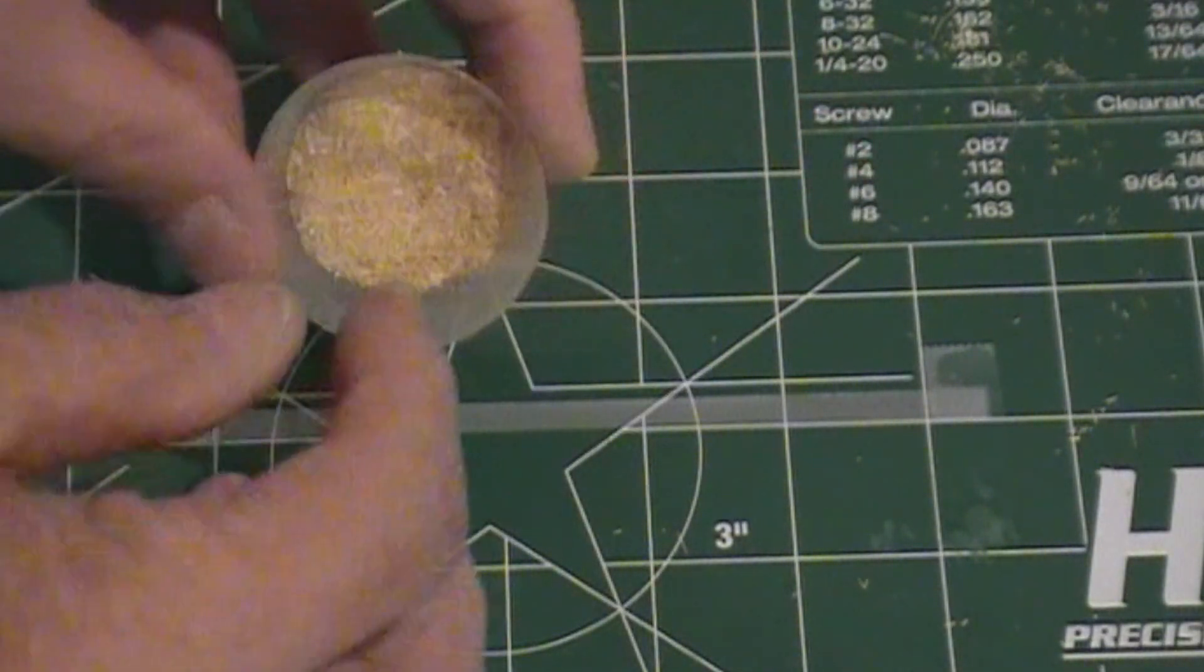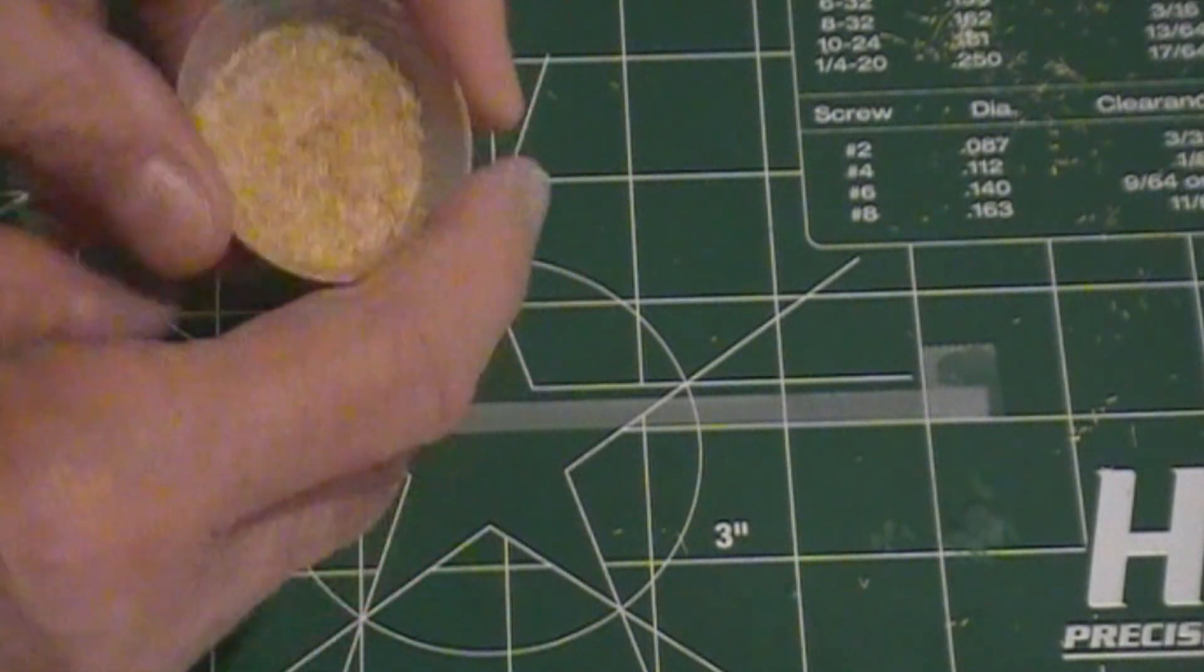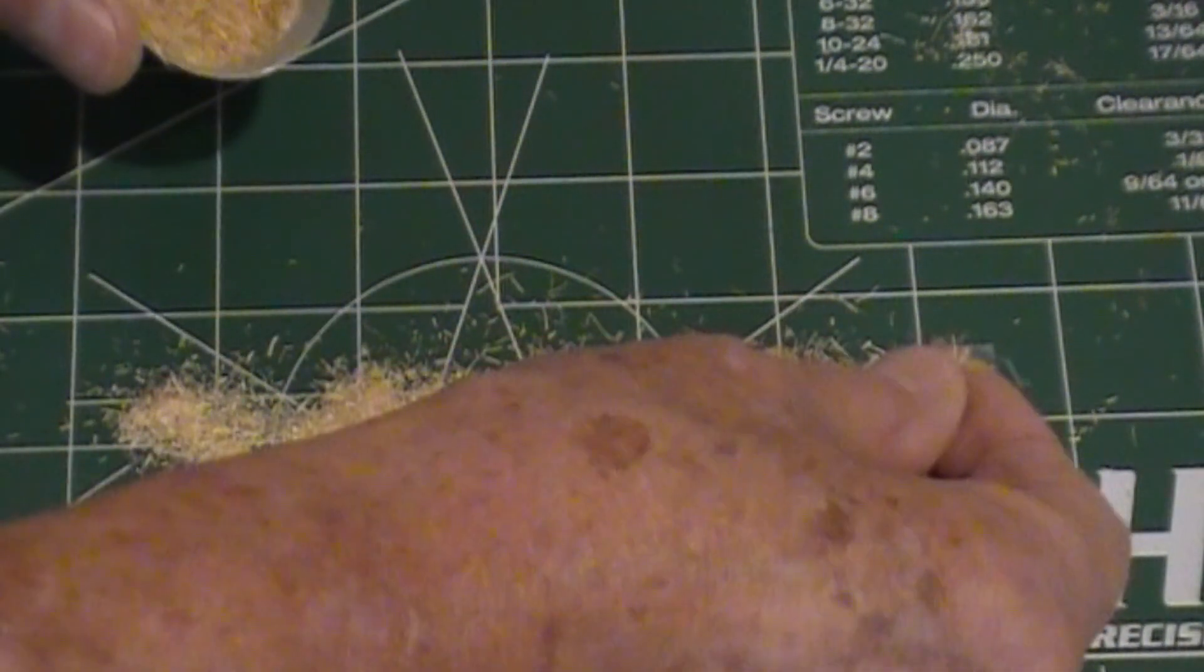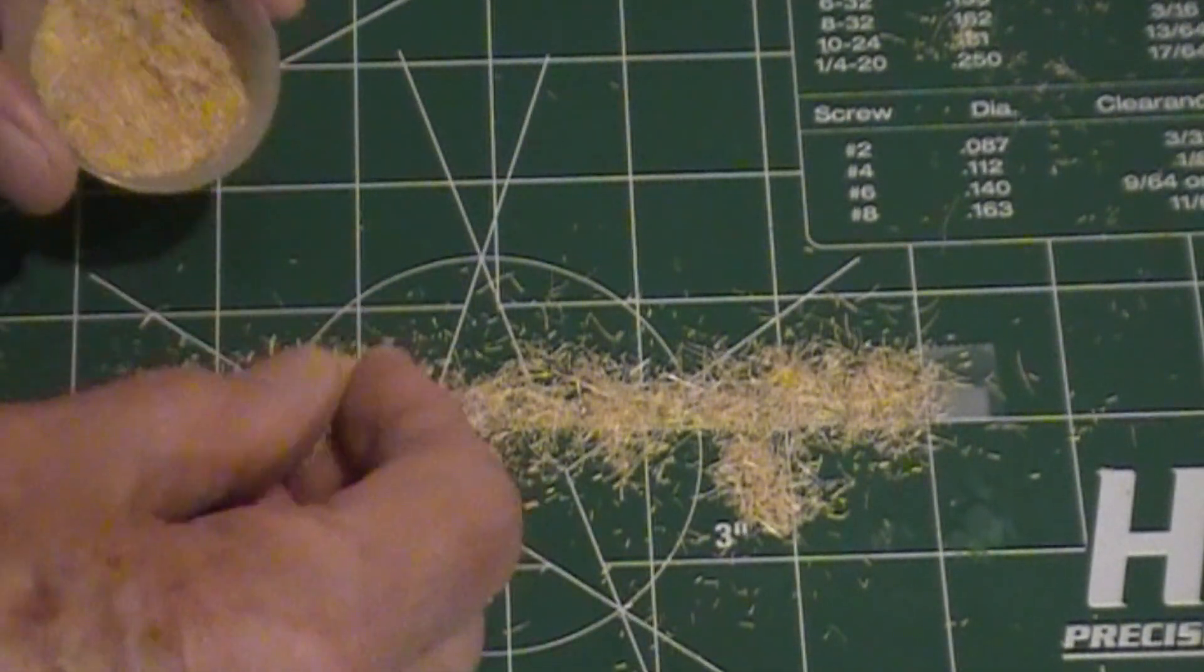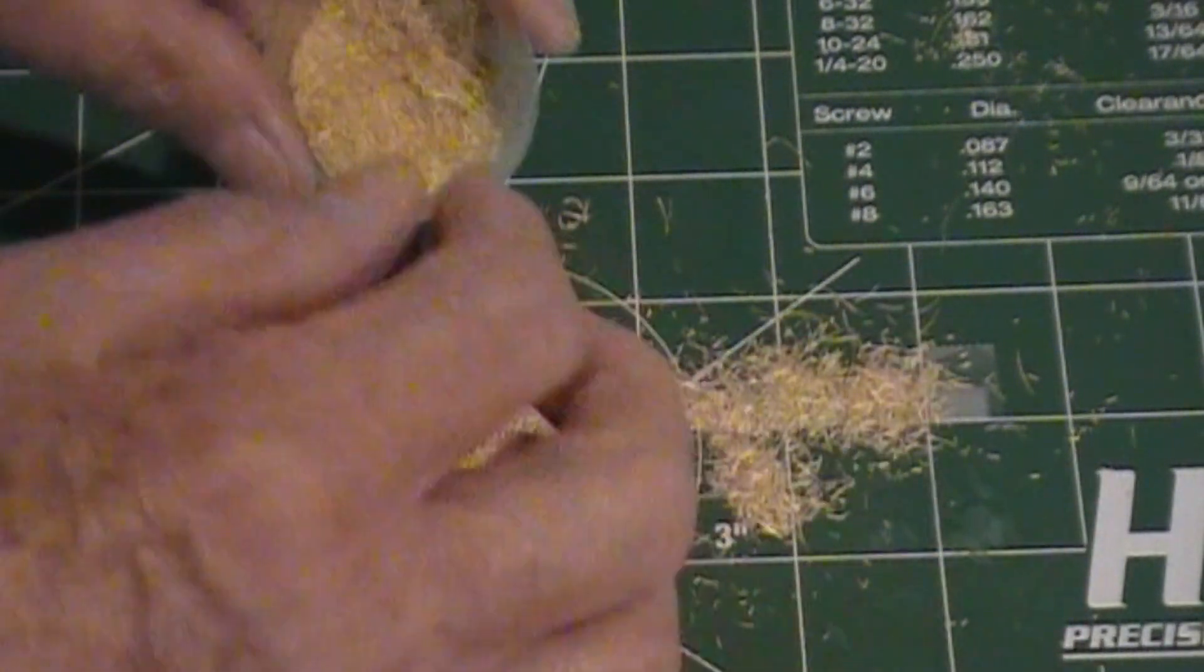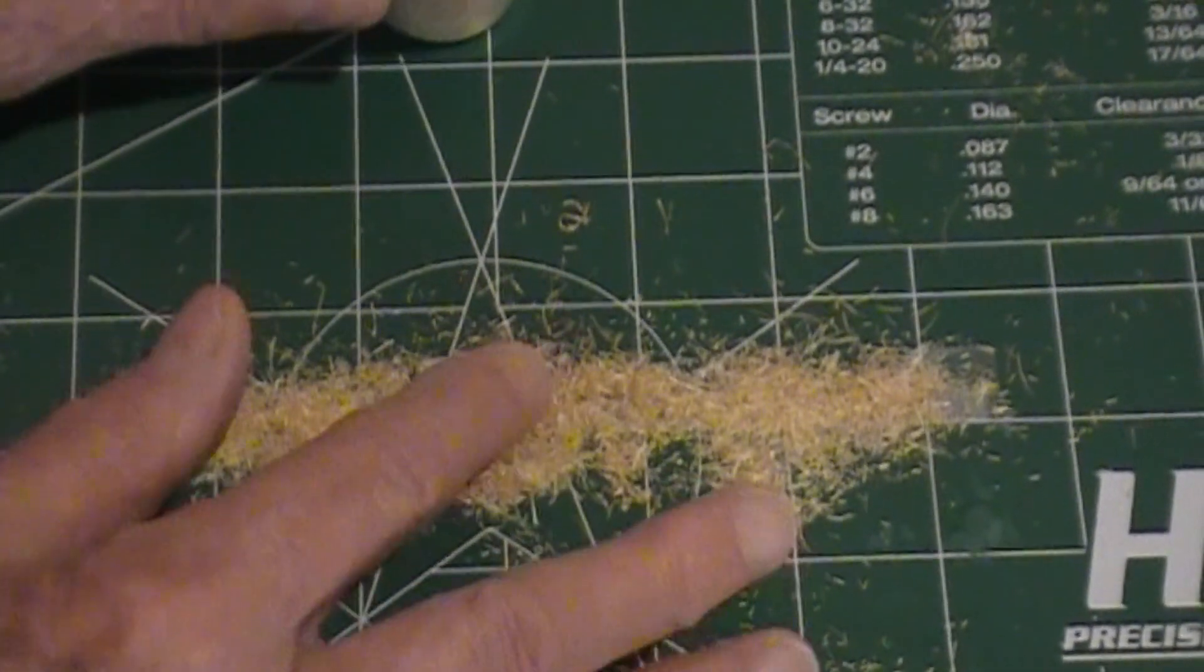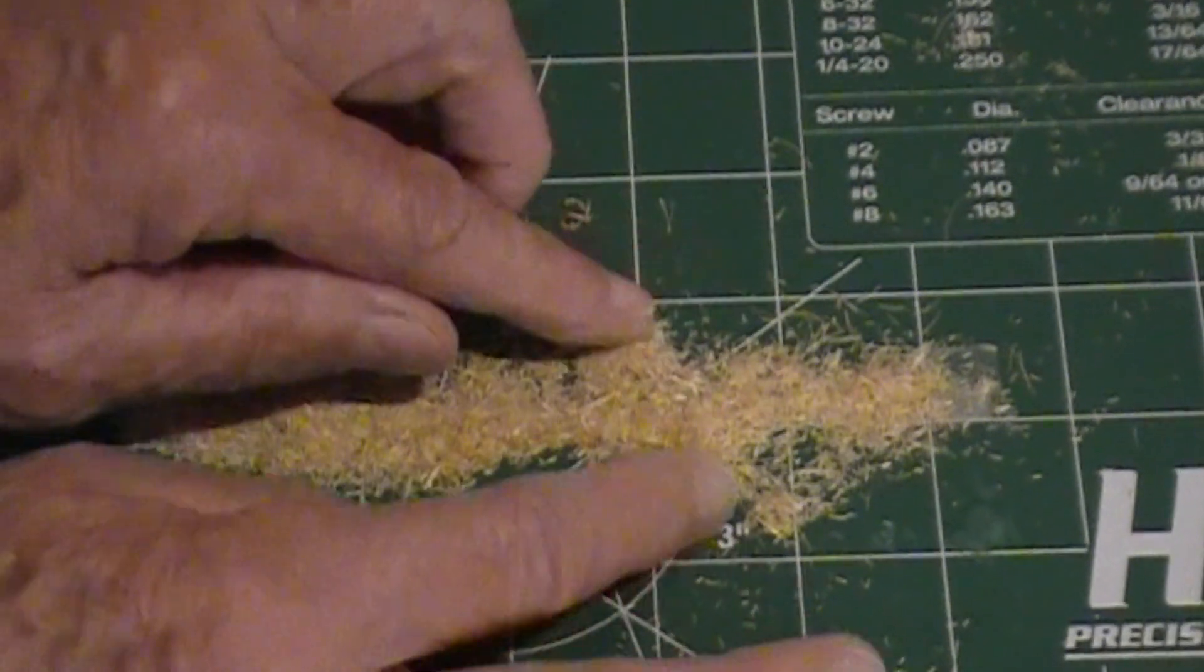I've got my jute twine that I'd chopped up here finely, and I'm just going to take that and spread that down. Just mat that in. Don't worry about getting too much in there, we're going to shake off what doesn't stick and we'll reuse it.